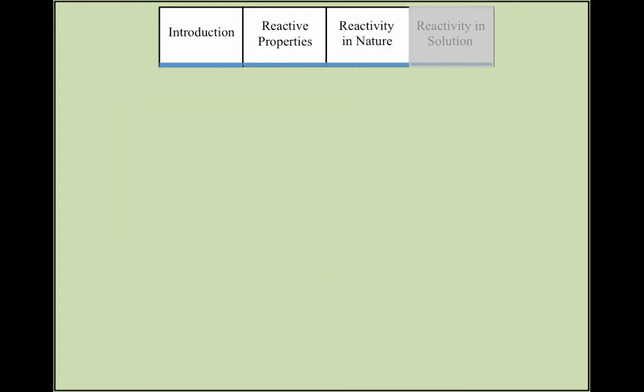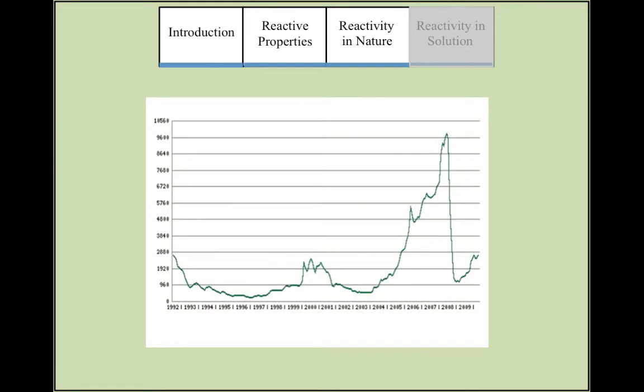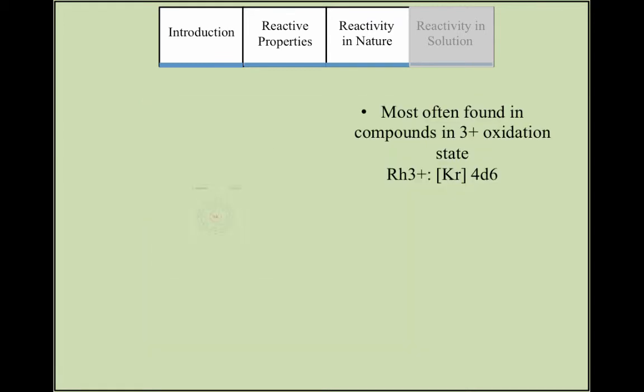Rhodium is also one of the rarest elements on earth and is typically very expensive. It is only found in nature in combination with other transition metals, usually with a plus 3 oxidation state.